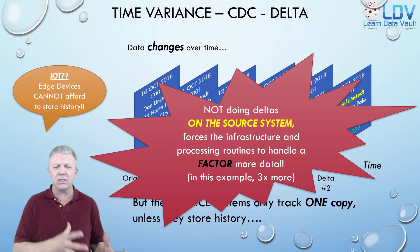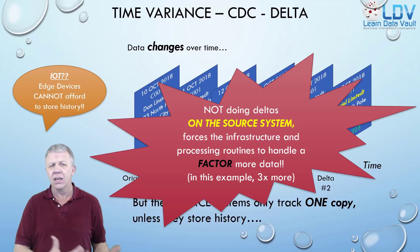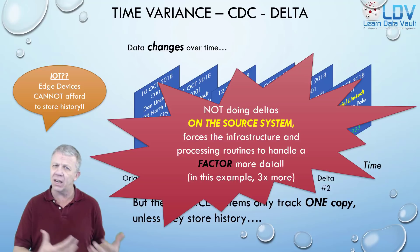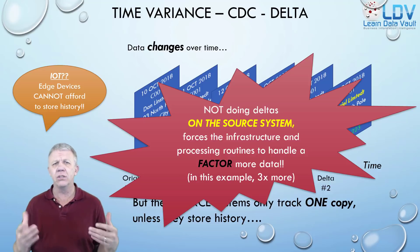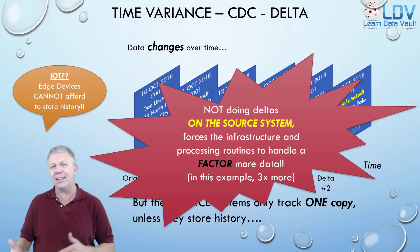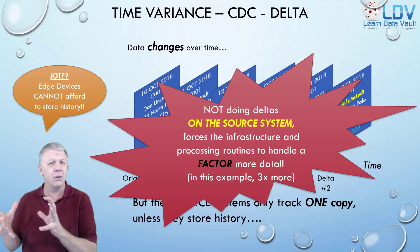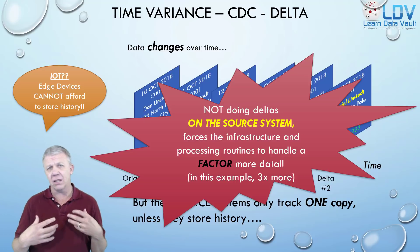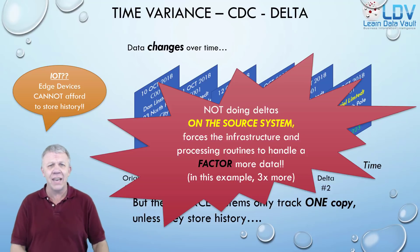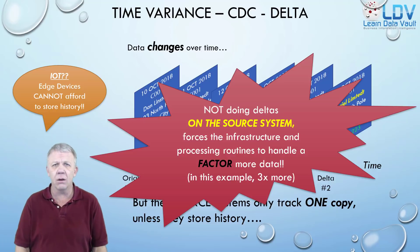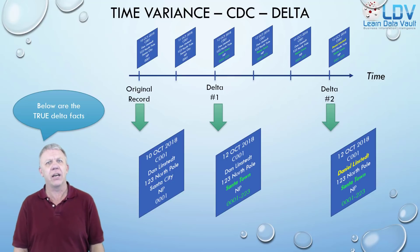Not doing deltas on the source system forces the infrastructure to add processing routines. This could be the real-time streaming engine — in the case of IoT, this is where we start looking at stream analytics and edge analytics, a discussion for another day. On source systems, it's actually cheaper to do all the delta processing on the application side and push messages than it is to do it in the warehouse. Pushing all that data on a consistent basis over and over again lands us right back into the notion of a batch window, which we can no longer afford to do.